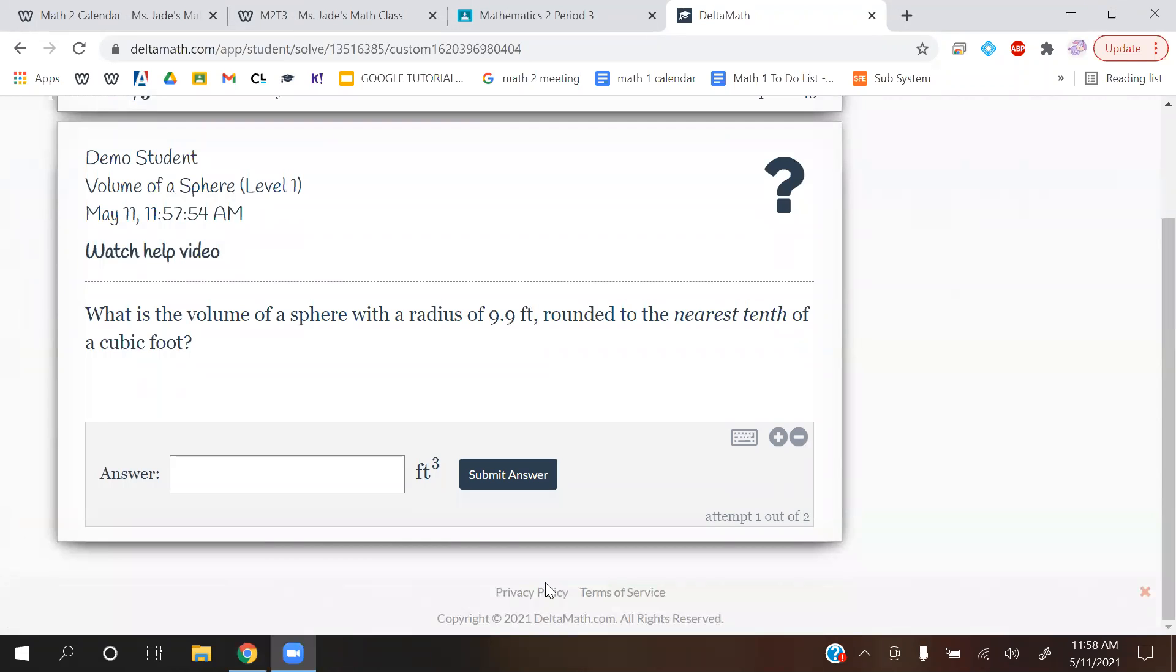So I believe for this category they will either give you a radius or a diameter as well. Alright, so let me draw you a sphere. If you don't know what a sphere is, it's literally like a ball, like a basketball, or a tennis ball, or a stress ball, whatever. It's a ball. So the round thing is a sphere.